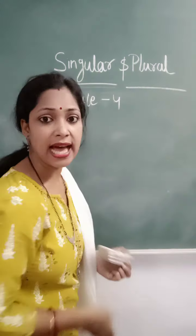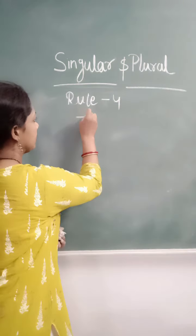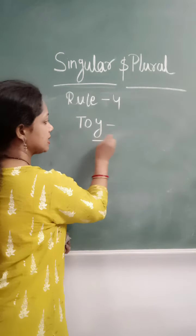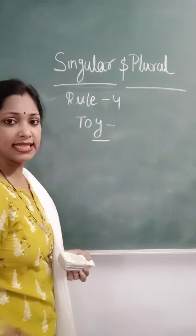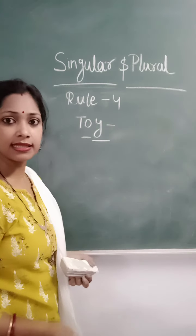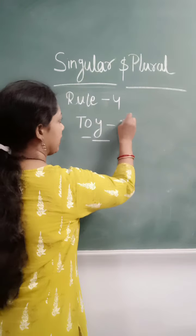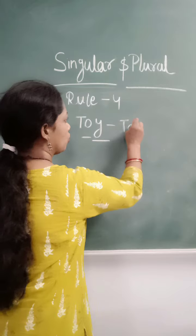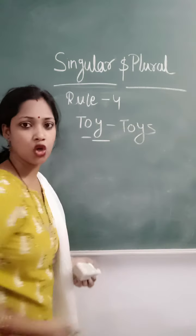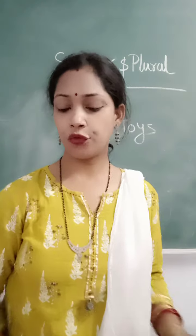This is the last example — it's toys. You can see the Y is there and before that is a vowel, O. So it will be T-O-Y-S — toys. Okay, so that's all for today.